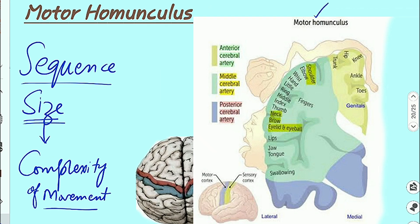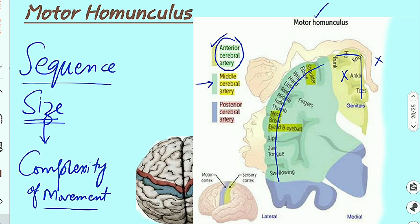Understanding the motor homunculus also helps in understanding cerebrovascular accidents. The part of the motor homunculus related to the lower limb is supplied by the anterior cerebral artery — a block there causes lower limb paralysis. The rest of the body's motor area is supplied by the middle cerebral artery, so a middle cerebral artery block affects that part of the body.